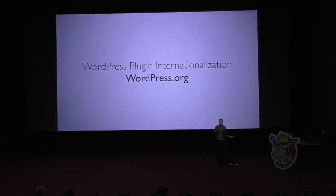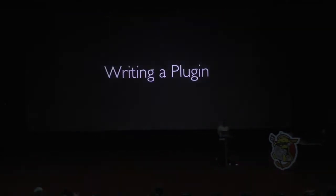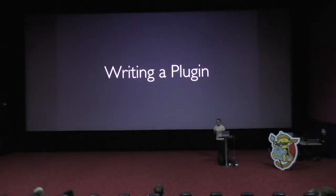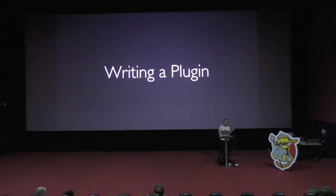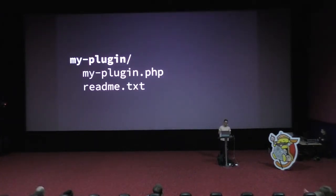Let's see what it takes to make a plugin translation ready. We start by building a new plugin. For this example, we assume that we want to publish it on WordPress.org, just like Jetpack or Yoast SEO and thousands of others. The most basic WordPress plugin consists of a single PHP file, where we can use the internationalization functions that WordPress provides to make our plugins translatable. We also have to add a readme file that explains how the plugin works.